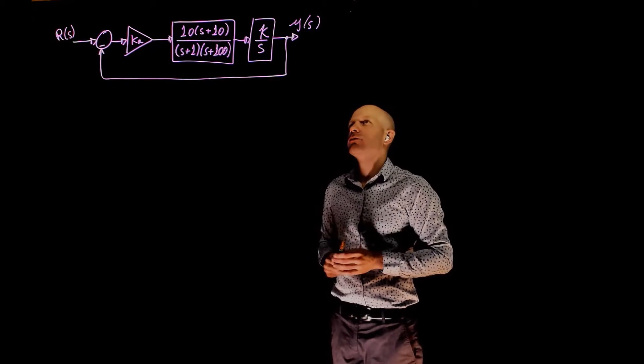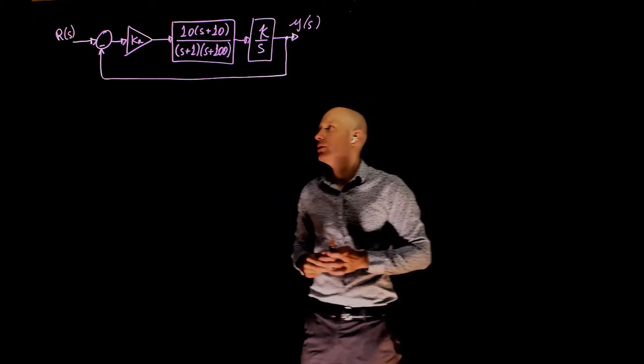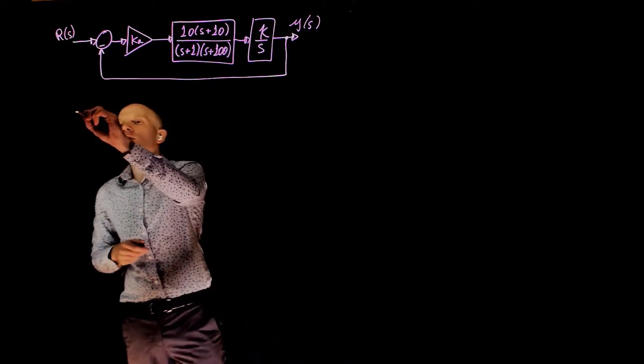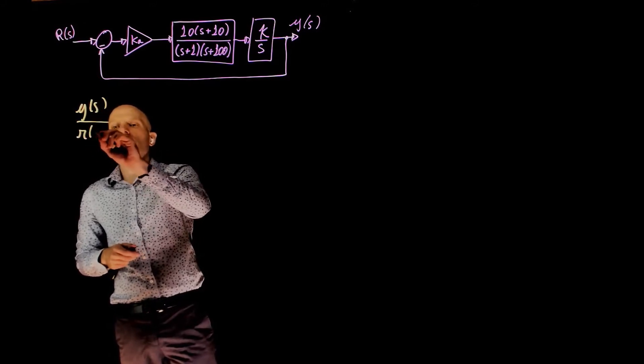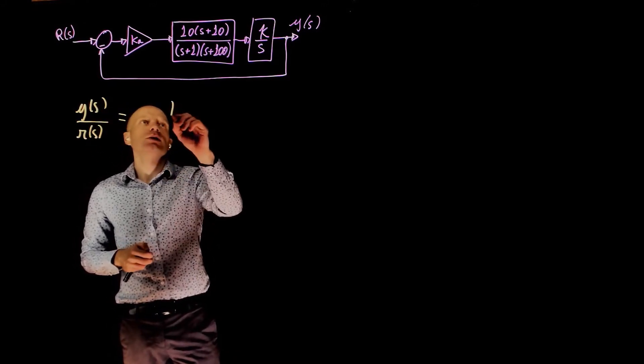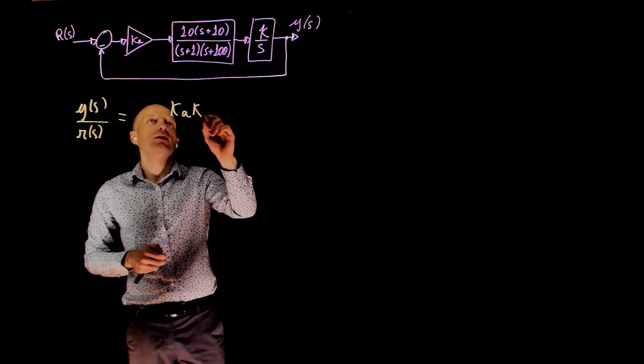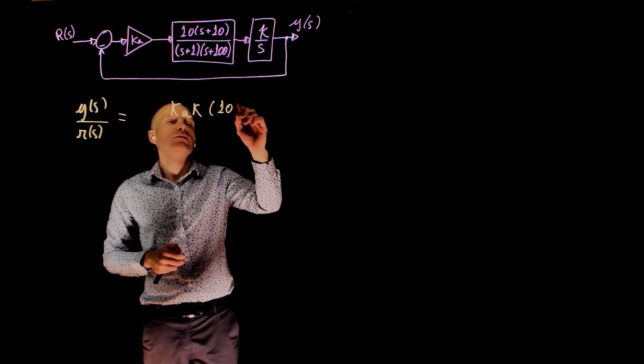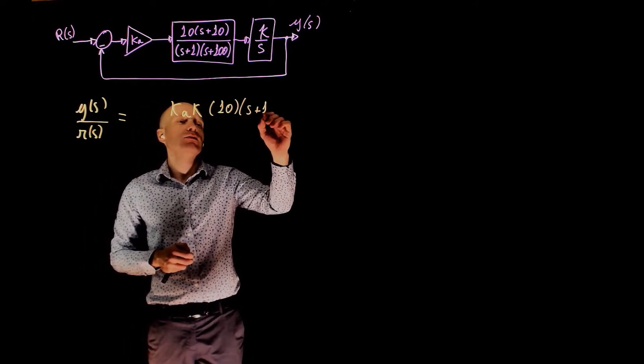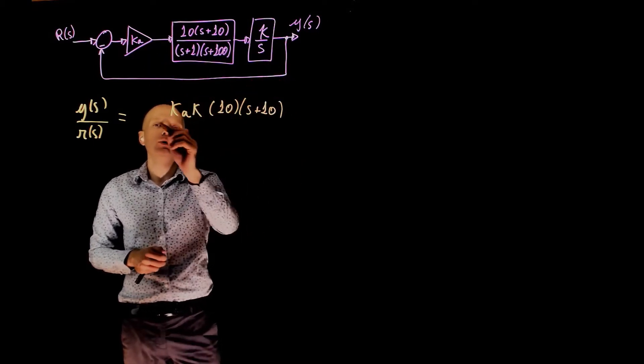To do that we first need the transfer function again, y over r, which in this case is simple to calculate. That is going to be ka times k times 10s plus 10, and the multiplication of the numerator here.